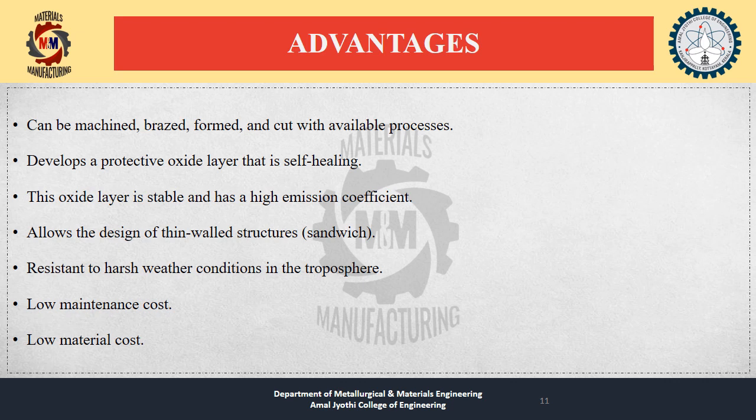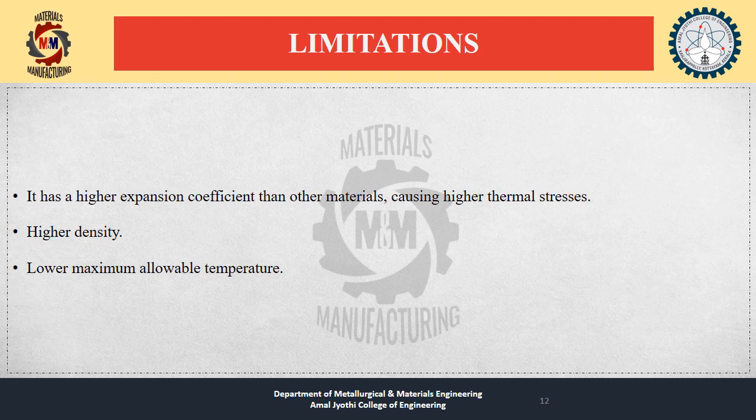The main advantages of ODS alloys are: they can be machined, brazed, formed, and cut with available processes; they develop a protective oxide layer that is self-healing; and this oxide layer is stable, has a high emission coefficient, and allows the design of thin sandwich-like structures with resistance to harsh weather conditions. ODS alloys also have low maintenance cost and low material cost. The limitations are: a higher expansion coefficient than other materials causing higher thermal stresses, higher density, and a lower maximum allowable temperature.